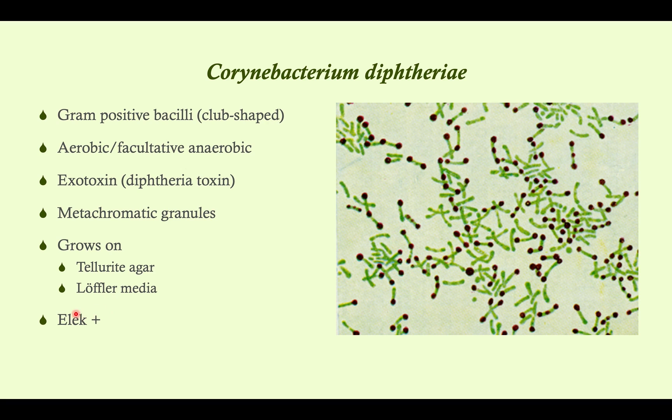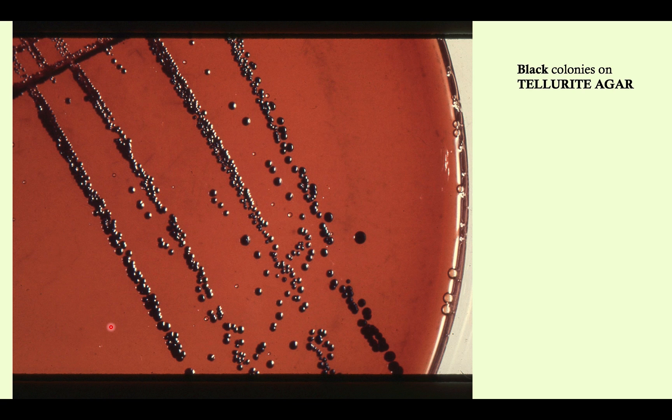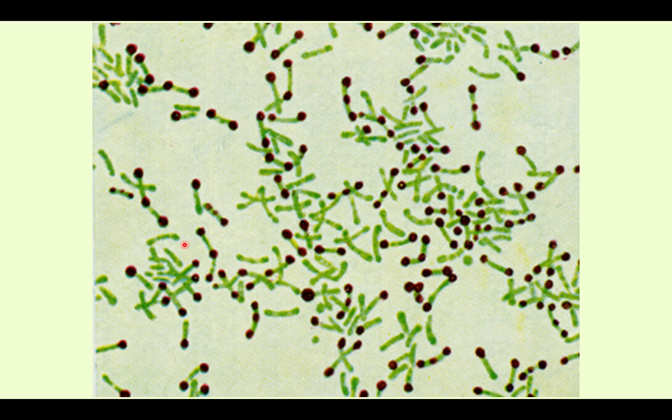Tellurite agar and Loeffler's media — and there's a test called an ELEK test. The ELEK test indicates a toxigenic strain of diphtheria, because not all C. diphtheriae strains are toxigenic or capable of forming a toxin. On tellurite agar, it forms black colonies. On Albert's stain, you can see the club-shaped organisms with granules staining blackish-purple and the rest of the rod staining green. This is often described as appearing like Chinese characters, and the organisms tend to form V- or L-shaped angles.